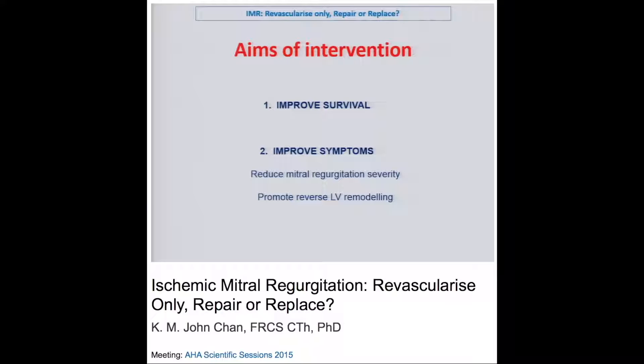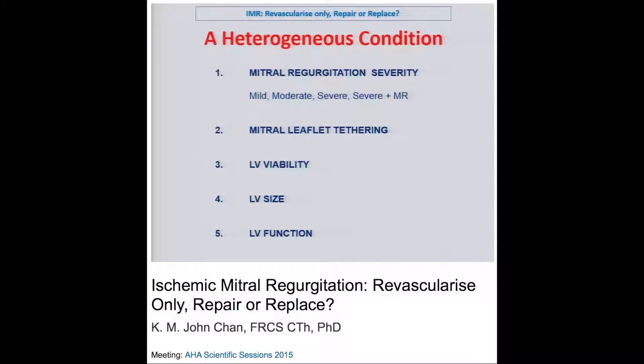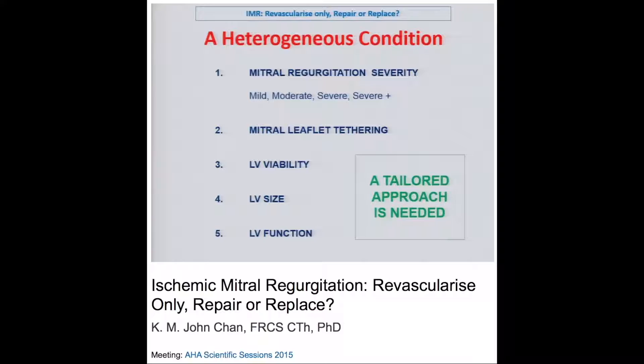The aims of any intervention in ischemic MR are twofold: firstly, to improve survival, and secondly, to improve symptoms. This can be achieved through reducing MR severity and promoting reverse LV remodeling. But ischemic MR is a heterogeneous condition — varying degrees of severity from mild to severe, different degrees of leaflet tethering, different degrees of LV viability, varying LV size and function. A tailored approach is needed for each individual patient.